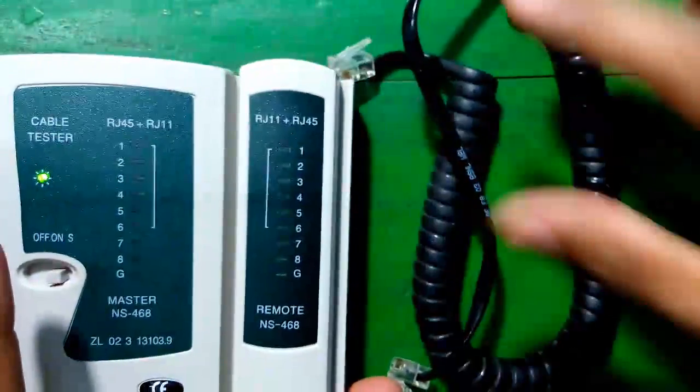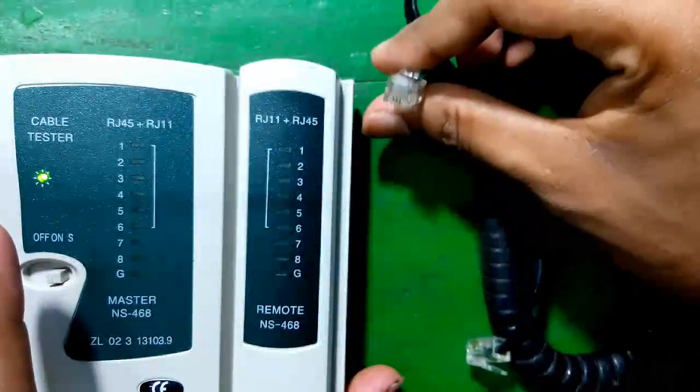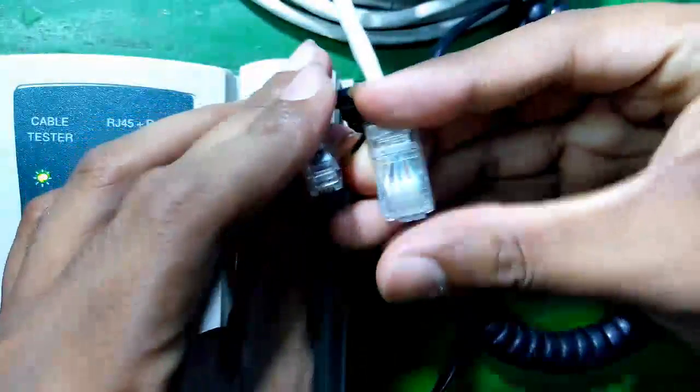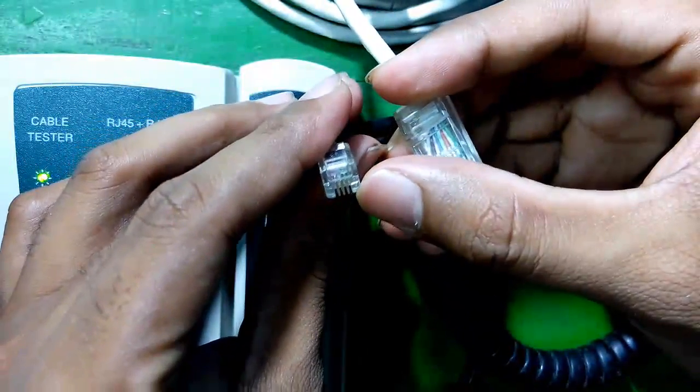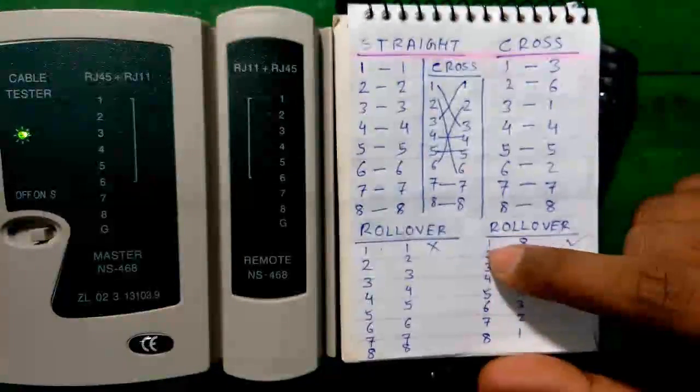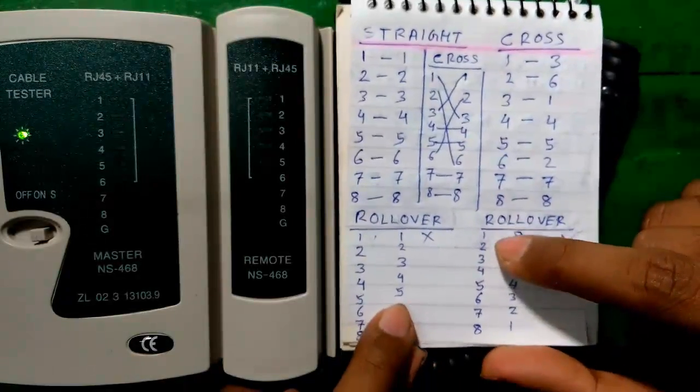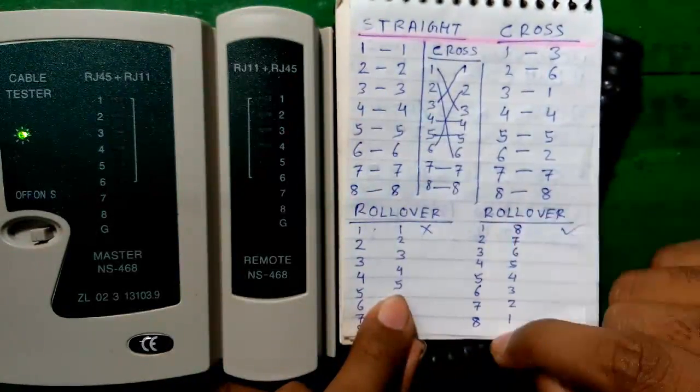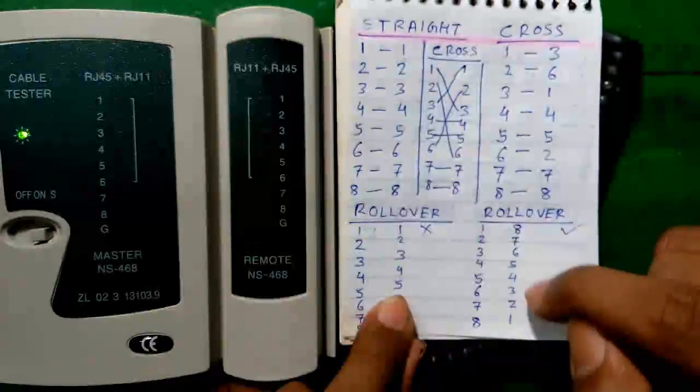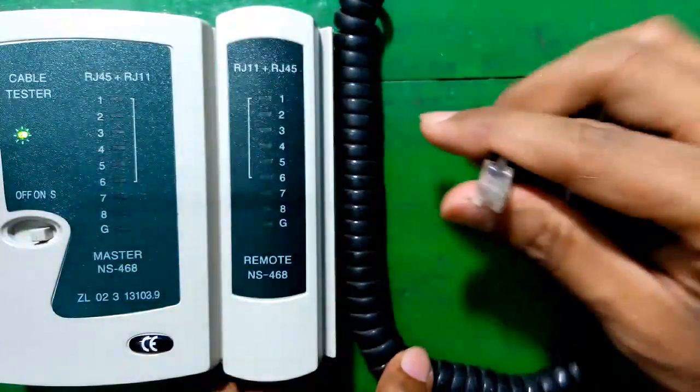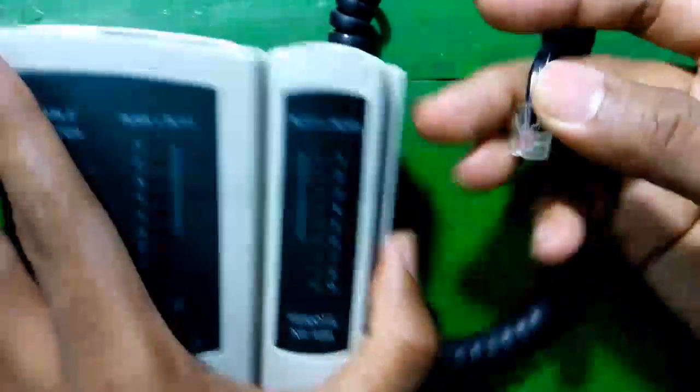And now we will check a rollover cable with RJ11 connector. So unlike the RJ45 connector, which has eight pins, the RJ11 connector has only four pins. So let's check the rollover cable. The rollover means just opposite connection. So for an eight pin rollover, one end will be one to eight and the other end will be eight to one, just reversed. They are just rolled over.